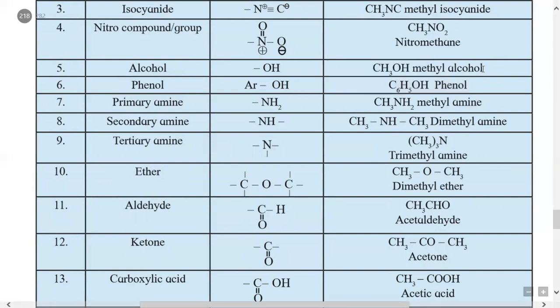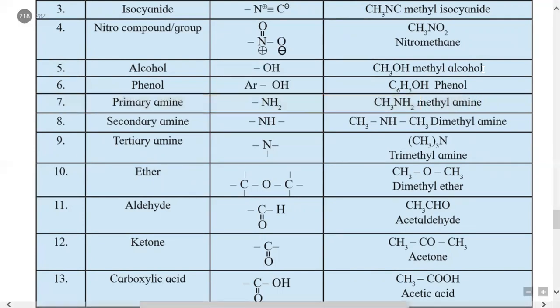The seventh type is primary amine. The functional group is dash NH2. Example: CH3NH2 is methylamine; replacing CH3 with C2H5 gives C2H5NH2, which is ethylamine.